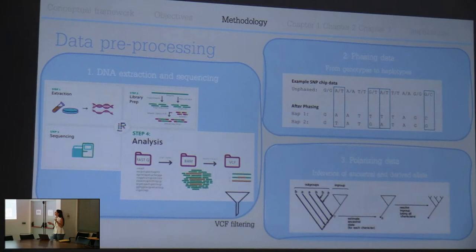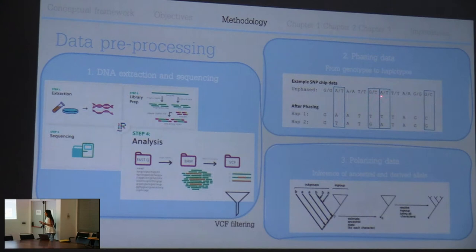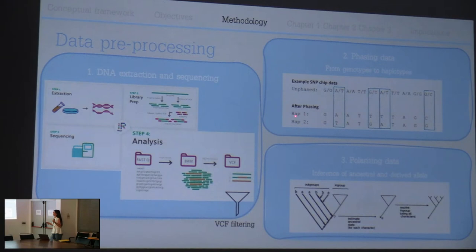The next step is phasing data. In this step we go from genotypes to haplotypes. When the data is unphased, I have genotypes but don't know if the alleles tend to be associated together. With the phasing process, we determine the typical haplotypes - that is one of the steps I did to the data.